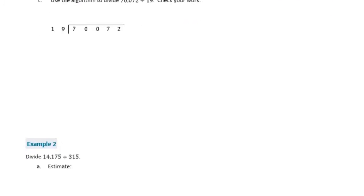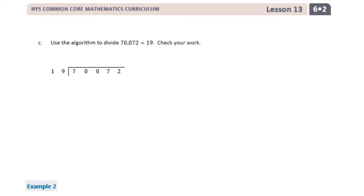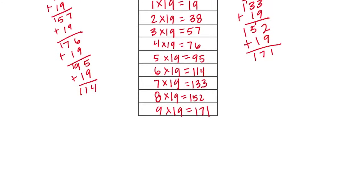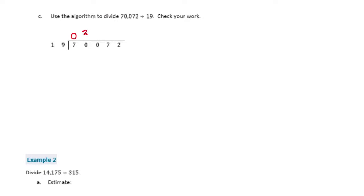C. Use the algorithm to divide 70,072 divided by 19. We're going to use this chart up here — it's going to be helpful. So we want to see how many times 19 can go into 7. Well it can't go into 7, but it can go into 70. If we look up here, 4 times 19 is 76, so that's too many. So it can go in 3 times, which is 57. So 3 times 19 is 57. If we subtract, we get 13.